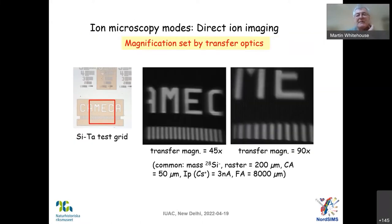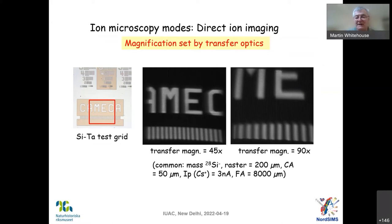In terms of magnification, this is simply set by the transfer optics. The transfer optics on the IMS 1280 and 1300 are essentially like the optics on a zoom microscope — you can just change the lens settings and change the magnification. Here you can see we take a different transfer magnification: 45 times on the left versus 90 times on the right, giving a much more magnified image.